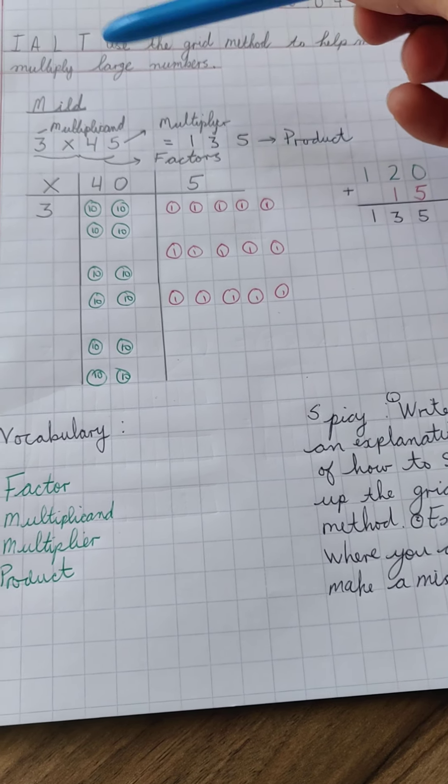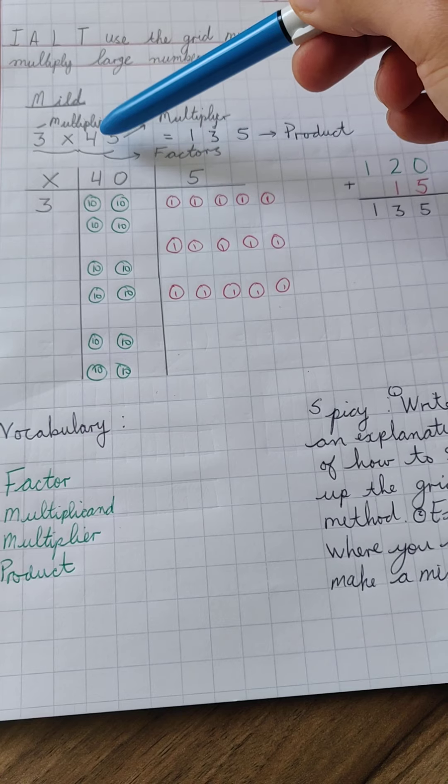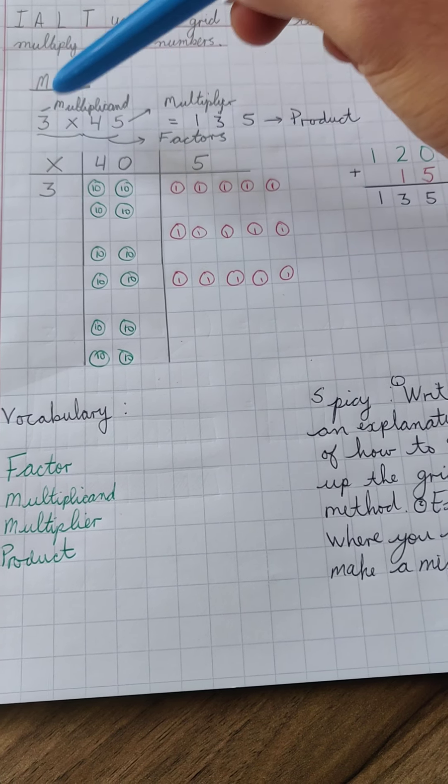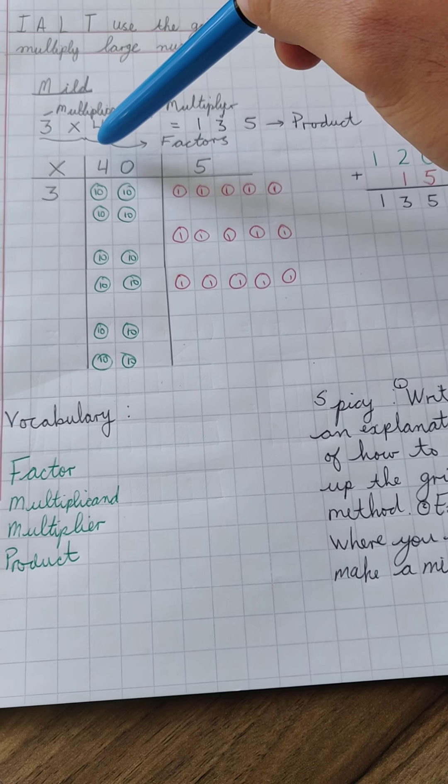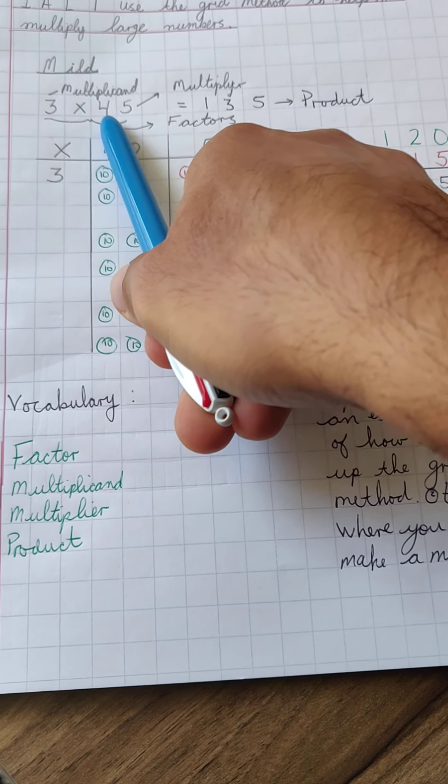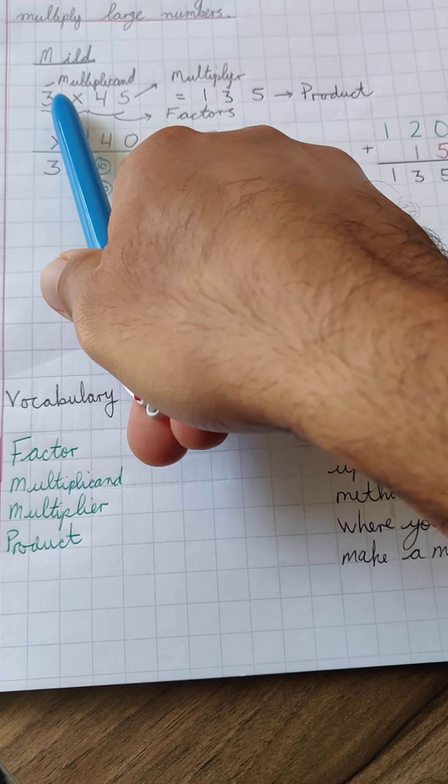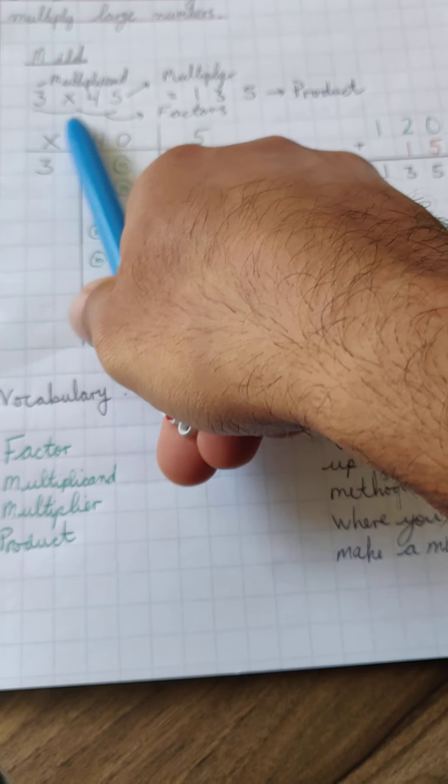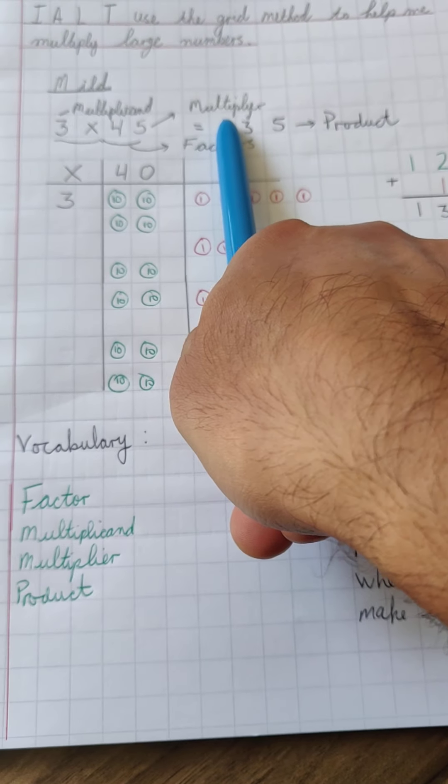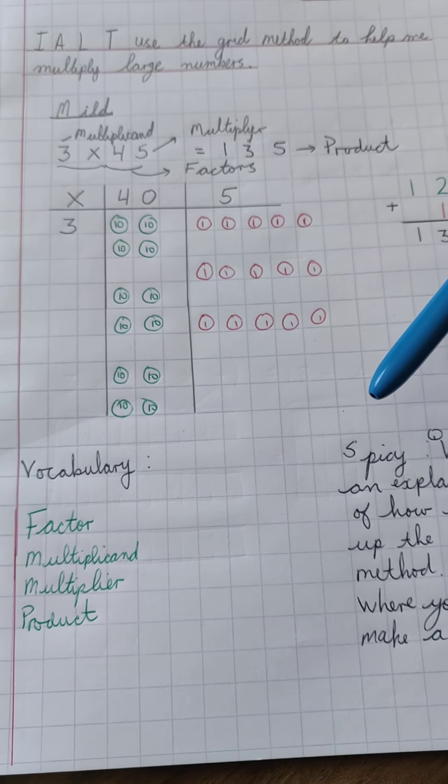So over here we have our simple multiplication. So again numbers are getting a little bit larger and this is just an example I've used 3 times 45. Now for the multiplicand, this number right here is called the multiplicand and this is called the multiplier and my answer is called the product. But you've also have heard me refer to these numbers in my calculation as factors so you can use factors or you can use multiplicand and multiplier. That's just a little bit more precise but again factors would just be equally susceptible.